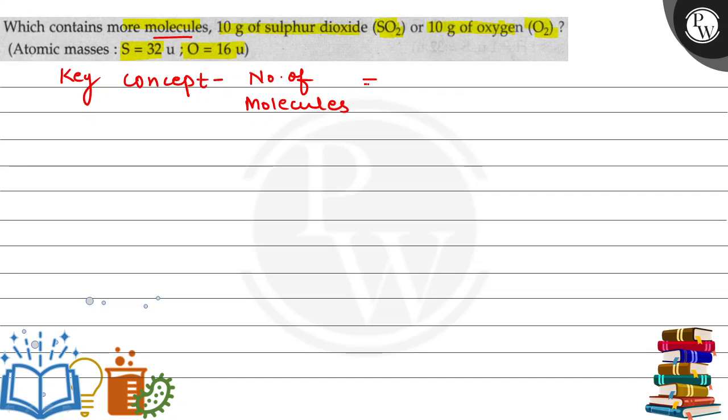will be equal to the given weight divided by the molecular mass, multiplied by Avogadro's number. Avogadro's number is a constant value: 6.022 × 10²³.